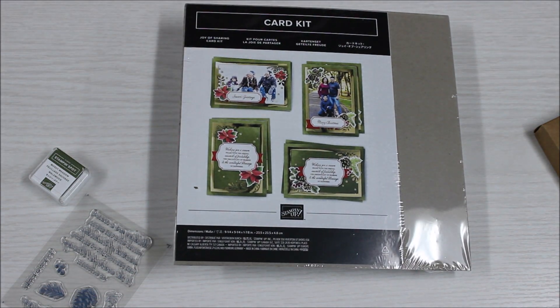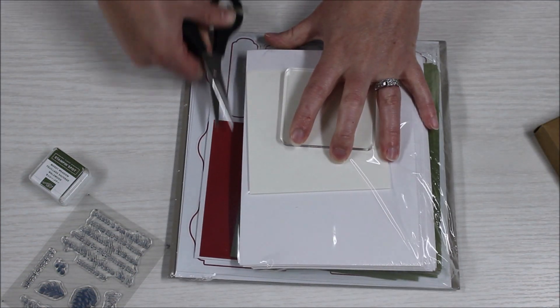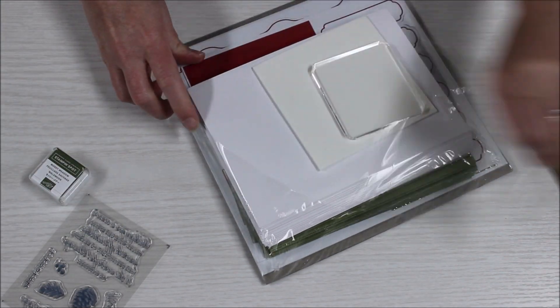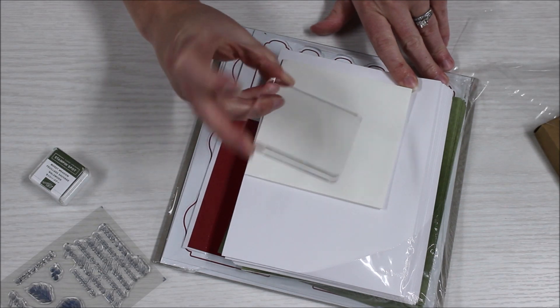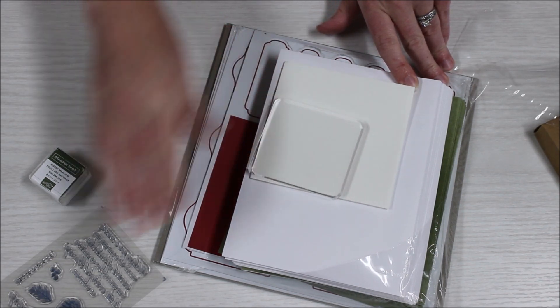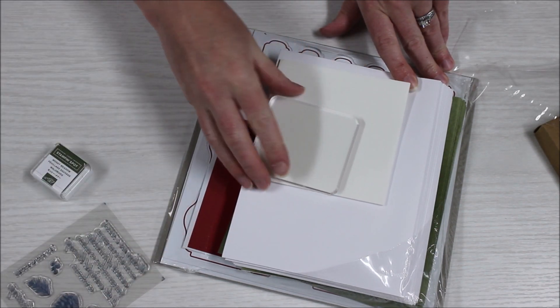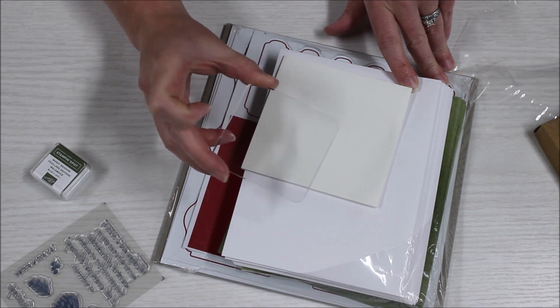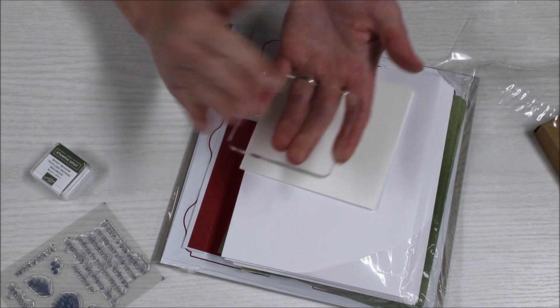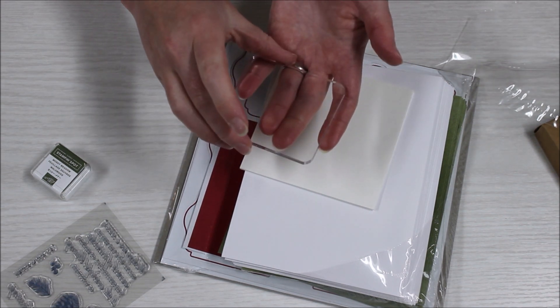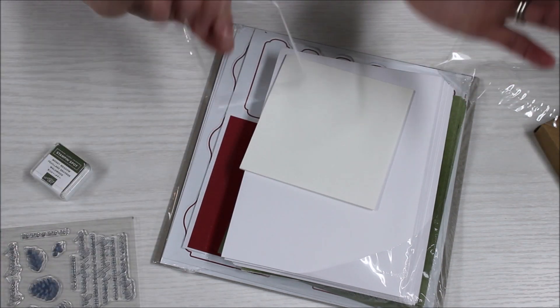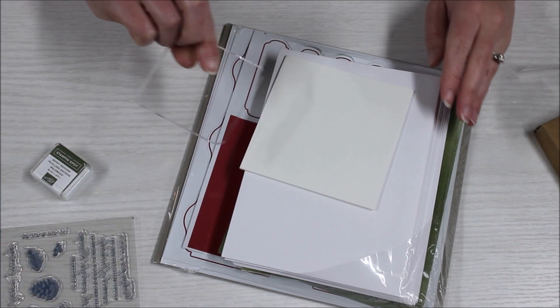So let's set those aside and open this up to see how fabulous this kit really is. Since it's all-inclusive, it comes with a clear block that you can use for these stamps as well as all future projects. This is a reusable block, so you just put the stamp on it, stamp as much as you need, clean off the stamp, and you can use this on any photopolymer or clear mount stamps.